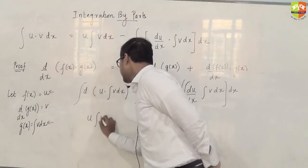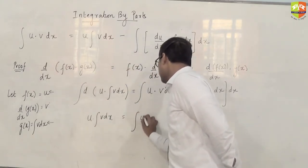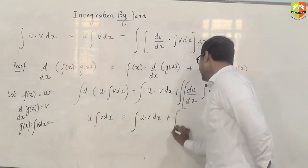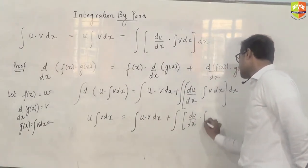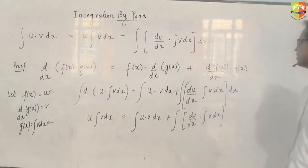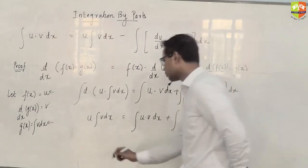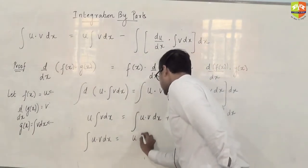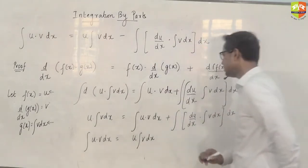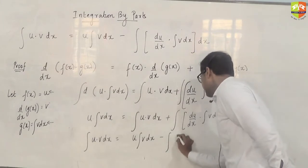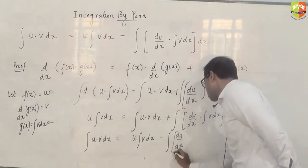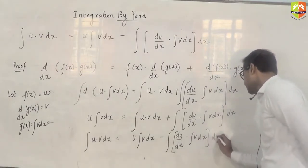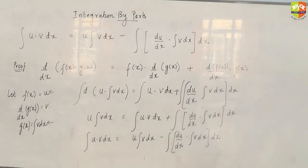So you have u integral V dx equals integral of uV plus integral of the product of du/dx into integral of V dx dx. Now let's make the subject of the formula. So integral of u times V with respect to x is u times integral of V minus integral of du/dx times integral of V dx.